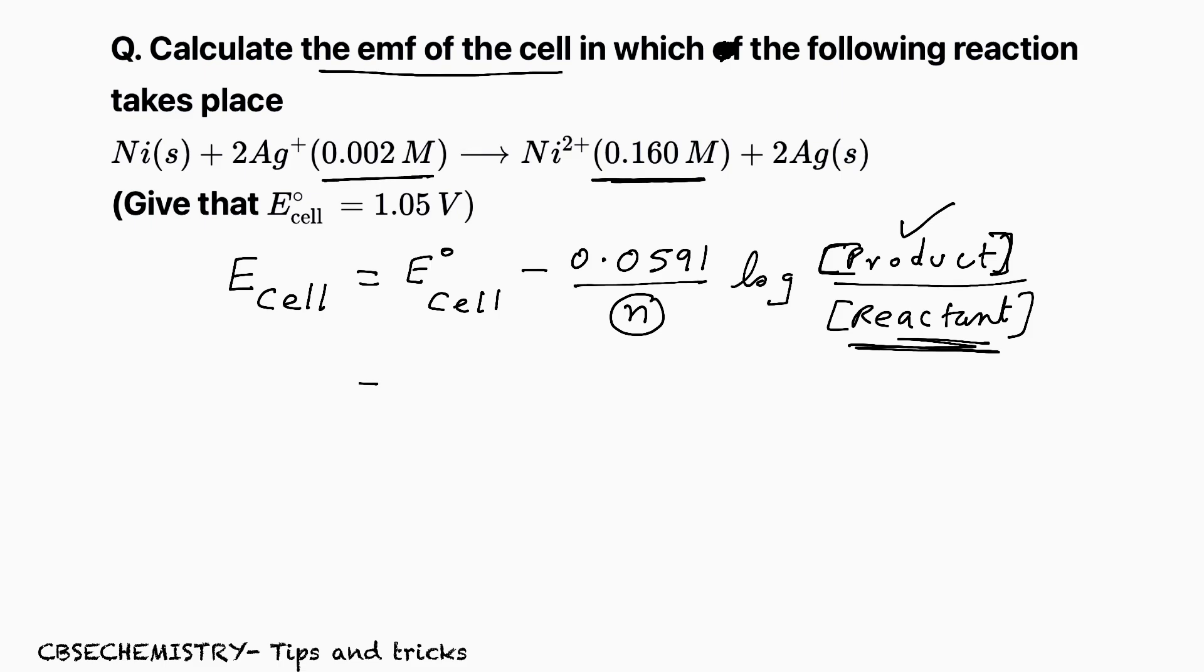Now, listen carefully how I am going to substitute. E_cell is 1.05 minus 0.0591 by N. You already understand what is N? N is equal to 2. See, nickel becomes Ni2+ by losing 2 electrons. So by 2 log.